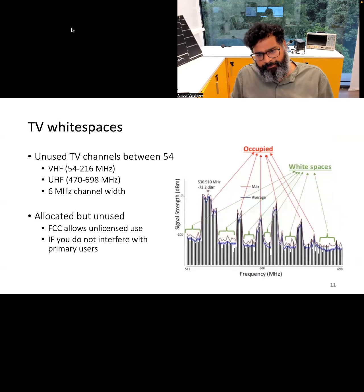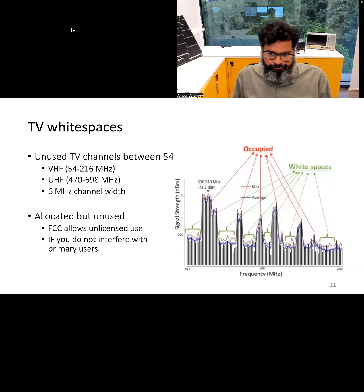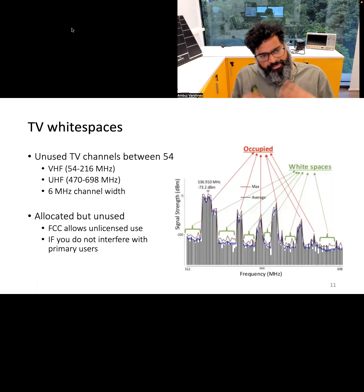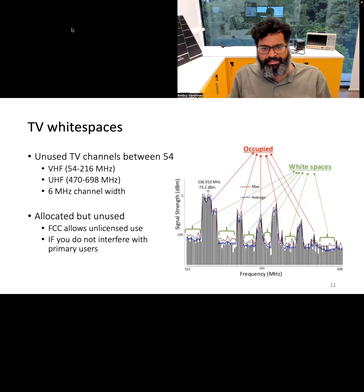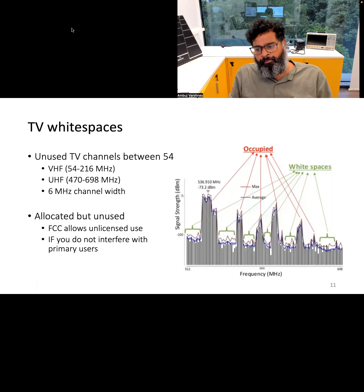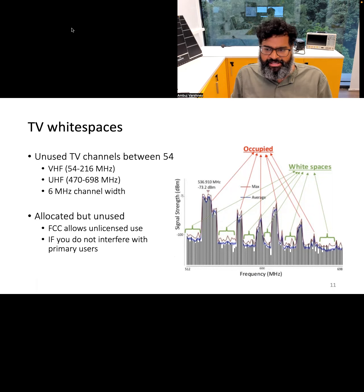In the final part of the lecture, we are going to talk about TV white spaces. Terrestrial TV broadcasts still exist in major parts of the world, typically occurring in the sub-gigahertz frequency band. As we recall, sub-gigahertz frequencies are great for propagation and allow communication at long distances for the same transmit power.